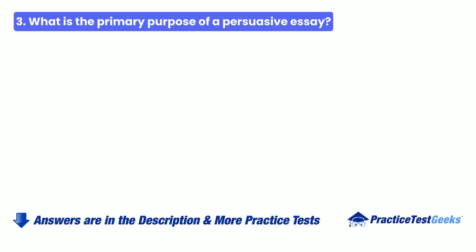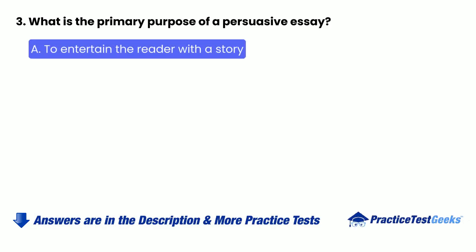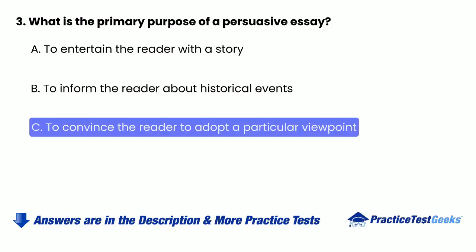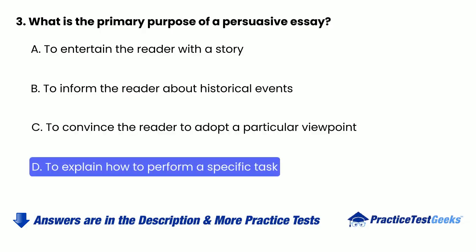3. What is the primary purpose of a persuasive essay? A. To entertain the reader with a story. B. To inform the reader about historical events. C. To convince the reader to adopt a particular viewpoint. D. To explain how to perform a specific task.